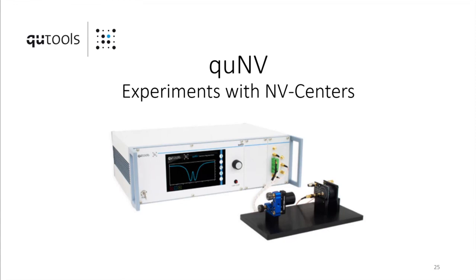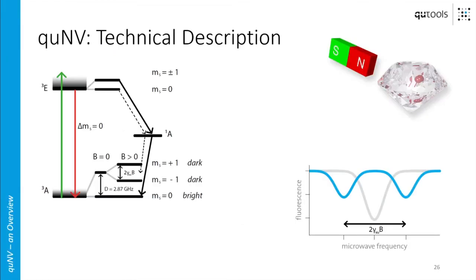Let's now talk about the QNV, our experiment suite where you can do experiments with the nitrogen vacancy centers in diamond. In the lattice structure of a diamond there can be error sites, and one possible error site is that there's a nitrogen atom instead of a carbon atom at one site, with an empty space at the next lattice site — that's why it's called a nitrogen vacancy center. This nitrogen vacancy center behaves as if it were an atom itself, even at room temperature, which is the big advantage of using NV centers in diamond. We use a green laser to excite the nitrogen vacancy center into an excited state.